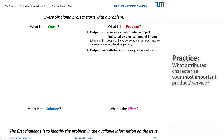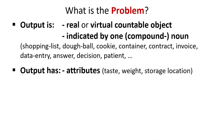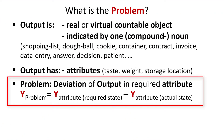Outputs cannot be measured, but their attributes can. A problem is defined by the deviation of an output in an important attribute — more specifically, a problem is the difference between the required state of the attribute and the actual state of the attribute. If this difference exceeds a generally accepted or even specified limit, then the output has a problem.